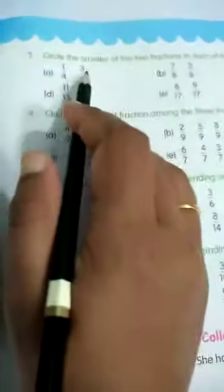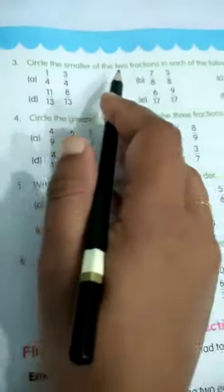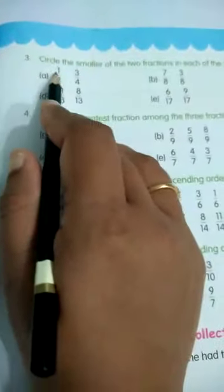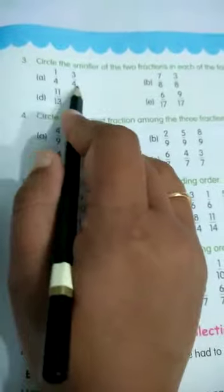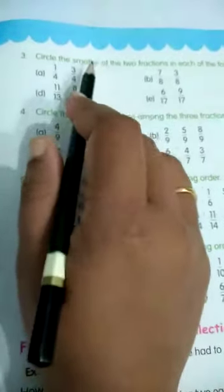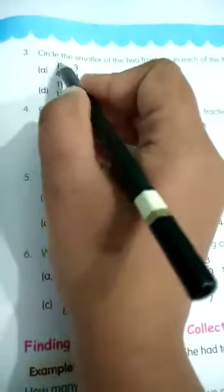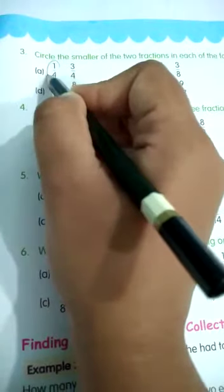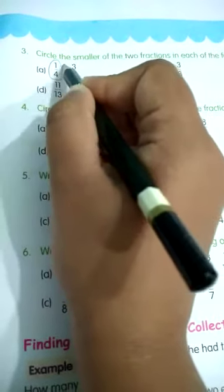Page number 109. Circle the smaller of the 2 fractions in each of the following. First question: 1 by 4 and 3 by 4. Among these 2 fractions, we have to circle the smaller one. 1 by 4 is the smaller one, so I circle this.